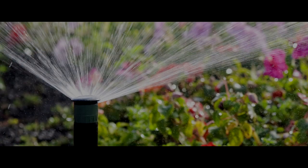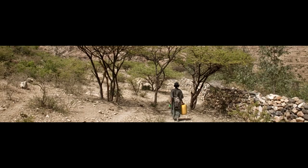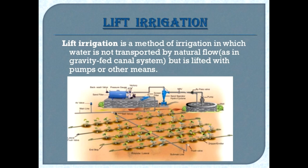If you want to use the irrigation method clearly, you can use the lift irrigation process. Generally, lift irrigation means a method of irrigation in which water is not transported by natural flow, but is lifted with pumps.